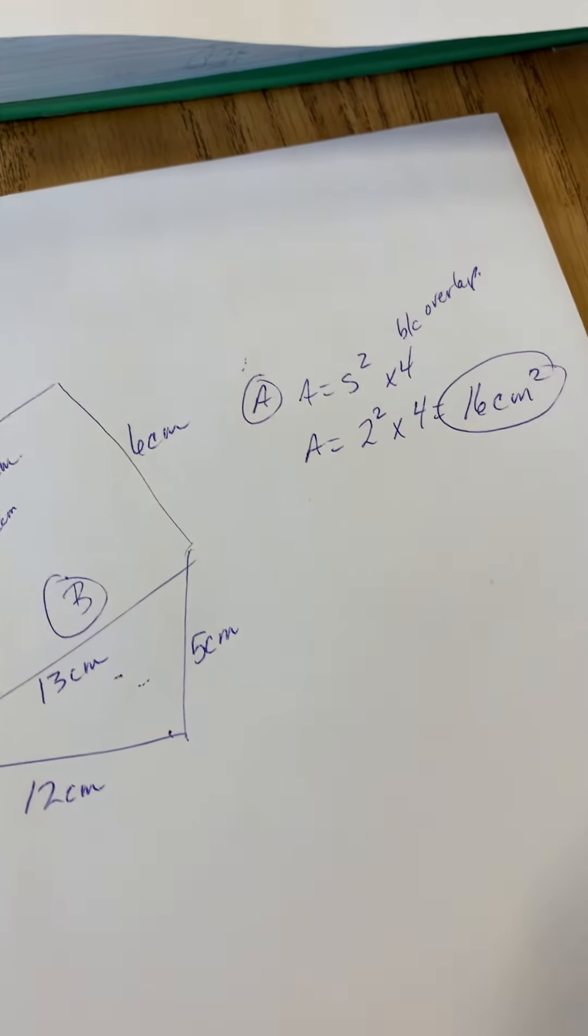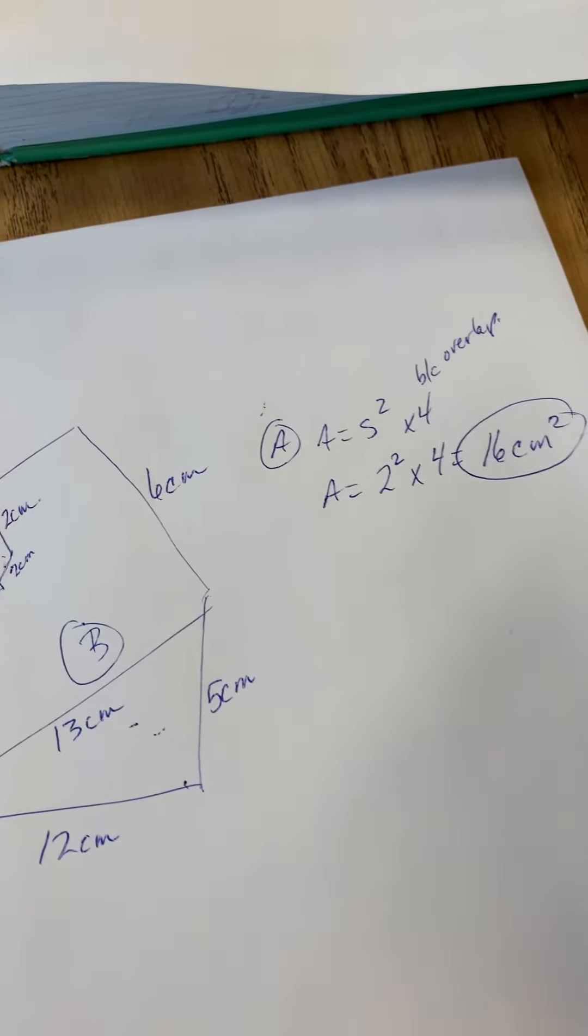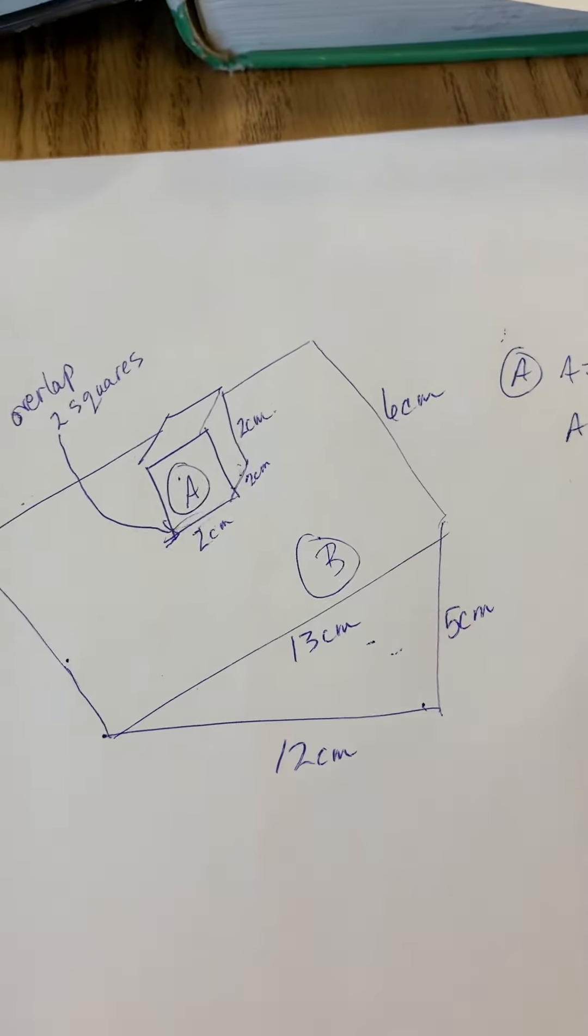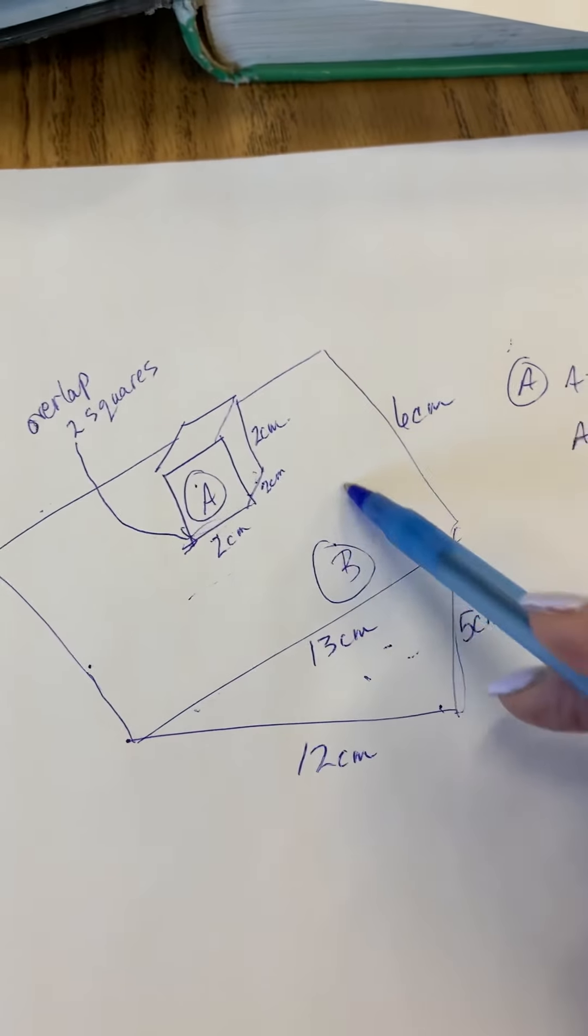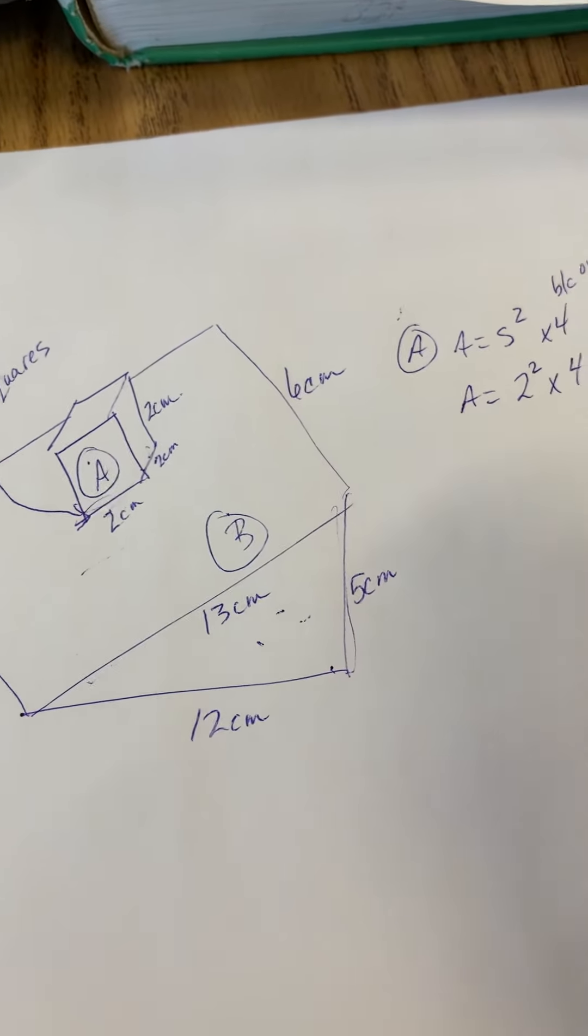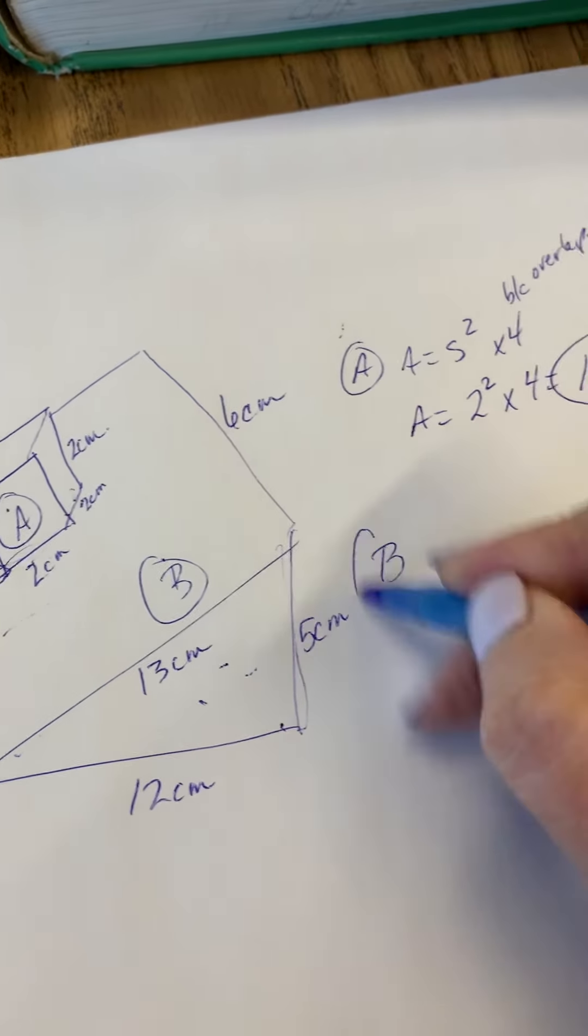And I'm going to circle that because I'm going to add that to find my total. Okay, now I'm going to come back to part B. In part B we think about this. Triangular prism is made up of triangles, but it's also made up of three different rectangles. There are five sides on a triangular prism.